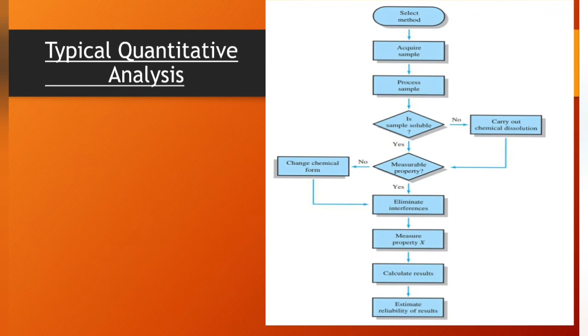Analytical Chemistry is a measurement science consisting of a set of powerful ideas and methods that are useful in all fields of science, engineering, and medicine. A typical quantitative analysis includes the sequence of steps shown in the diagram. In some instances, one or more of these steps can be omitted. For example, if the sample is already a liquid, we can avoid the dissolution step.